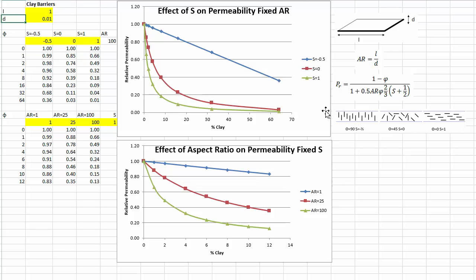We can show the effect of these parameters and the percent clay on the permeability in these two complementary graphs. At the top we define an aspect ratio for an L and a d.